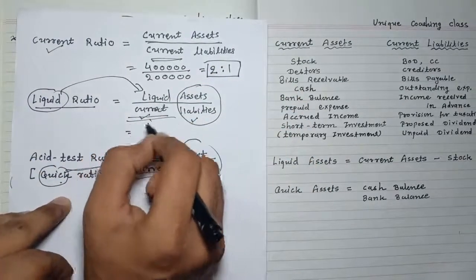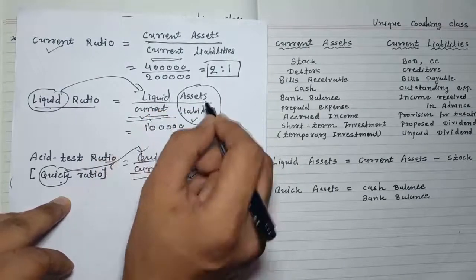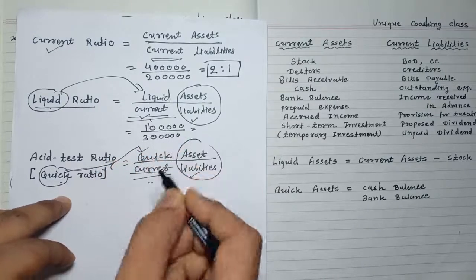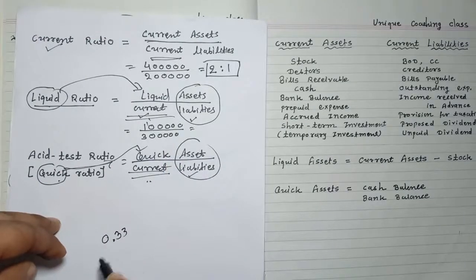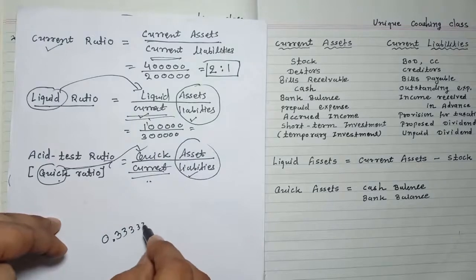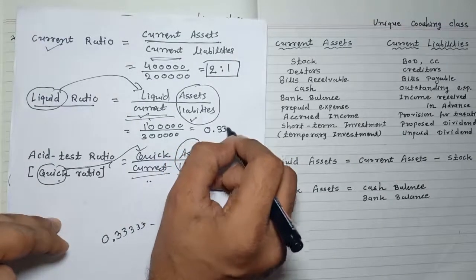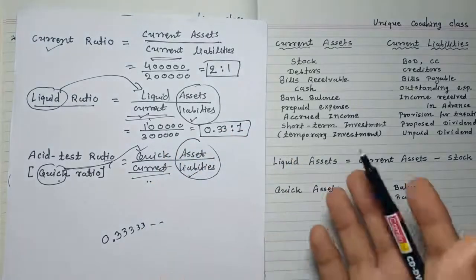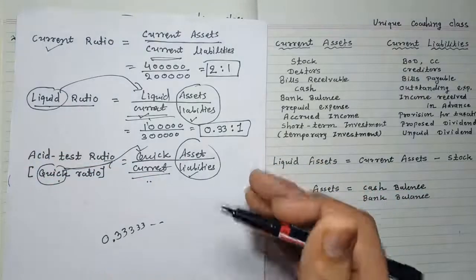For example, if current assets are 1 lakh, liquid assets are 1 lakh, and current liabilities are 3 lakh, then 1 lakh divided by 3 lakh gives 0.33. We write this as 0.33:1. So for current ratio, liquid ratio, and quick ratio, always express the answer in the raised-to-1 format, such as 0.33:1.